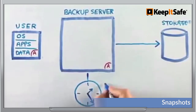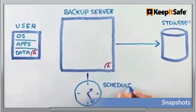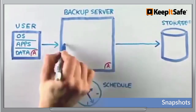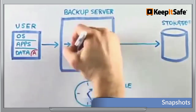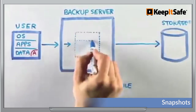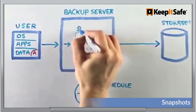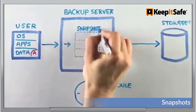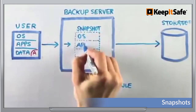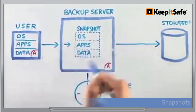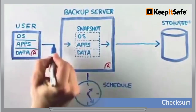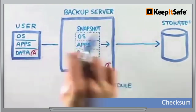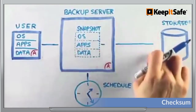New and changed blocks are constantly monitored, so when it's time for a snapshot, the agent simply copies the new and changed data to the backup server. All along the way, a checksum process is used to verify the success of every backup.